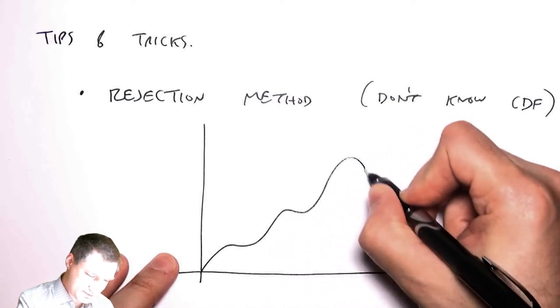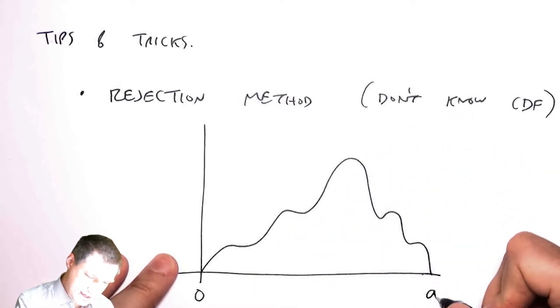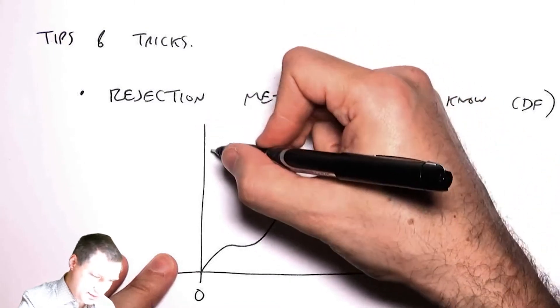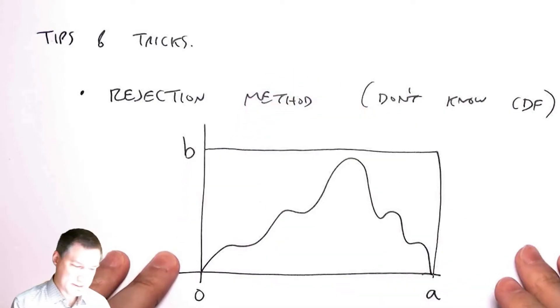Let's assume that the PDF is between 0 and A, and suppose that I can bound it inside a box from 0 to B.